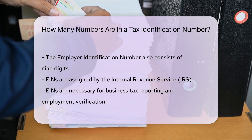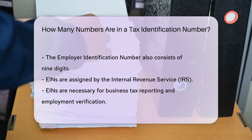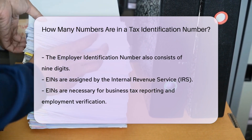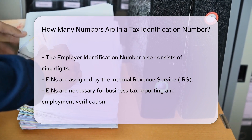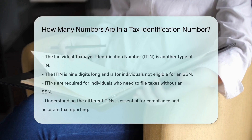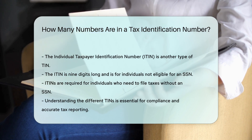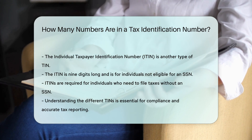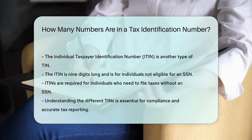Another type of TIN is the Individual Taxpayer Identification Number, or ITIN. This number is also nine digits long and is issued to individuals who are not eligible for a Social Security number but need to file taxes. It is important to understand that while these TINs share the characteristic of being nine digits long, they serve different purposes within the tax system. When dealing with taxes, ensuring that the correct TIN is used is essential for compliance and accurate reporting.